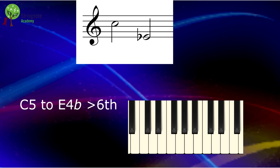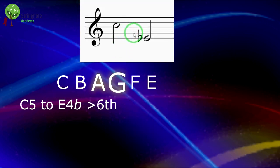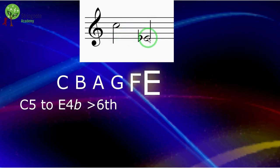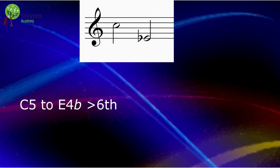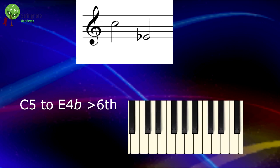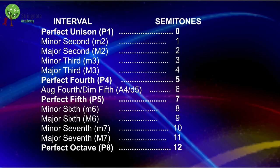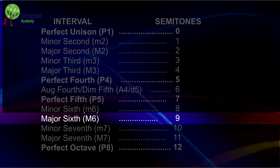Here we have a sixth — one, two, three, four, five, six — but what is the quality? Let's count the semitones: zero, one, two, three, four, five, six, seven, eight, nine. We have nine semitones, so looking in our table, this is a major sixth.